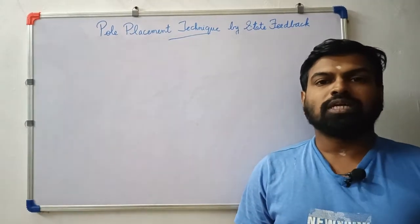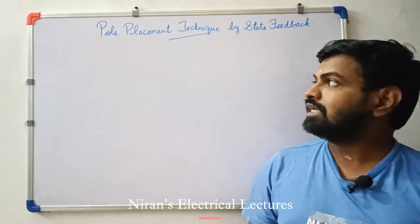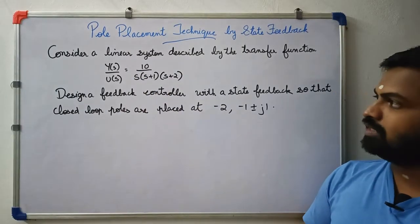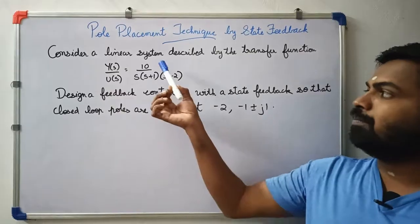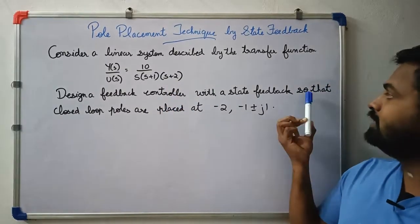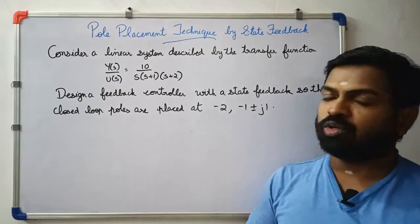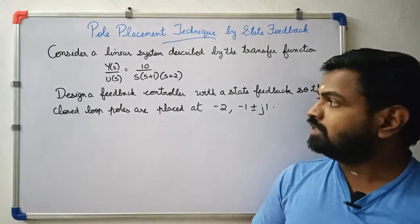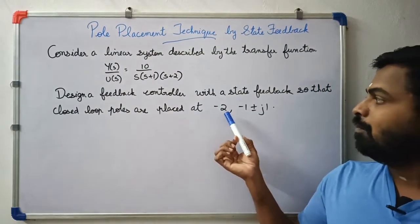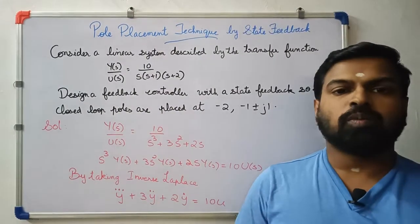Hello friends, we have a problem with pole placement technique. We have two methods. Consider a linear system described by the transfer function y(s)/u(s) equals 10 divided by s(s+1)(s+2). Design a feedback controller with state feedback so that the closed loop poles are at minus 2, minus 1 plus or minus j1.